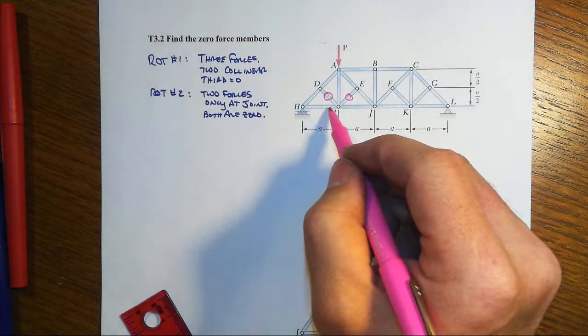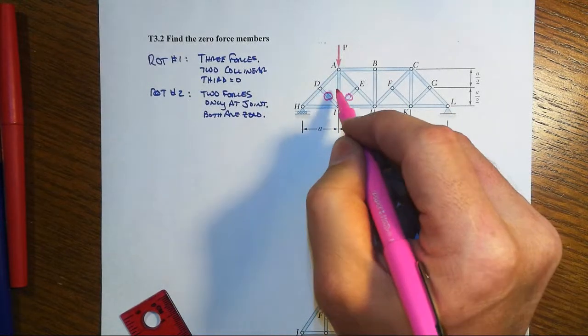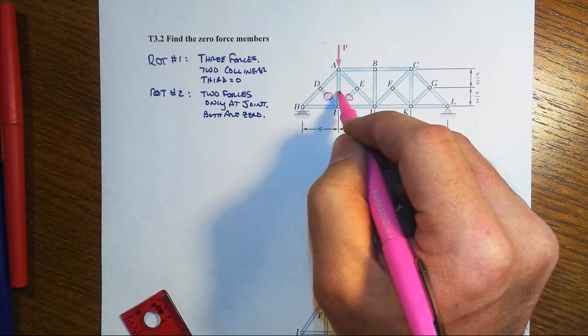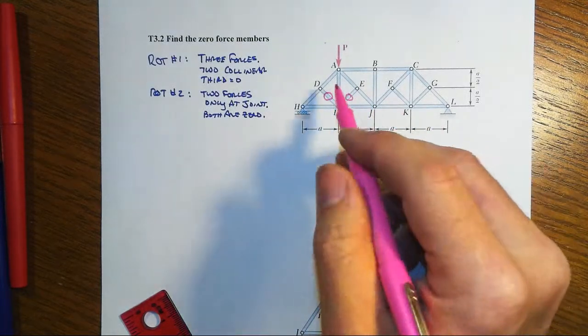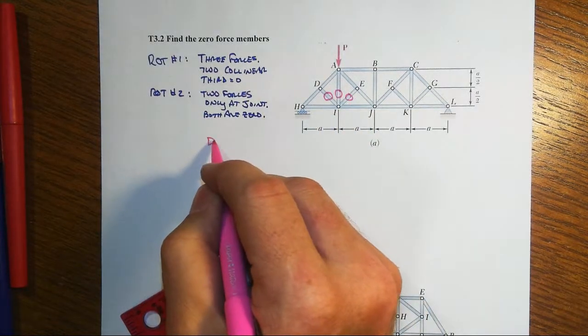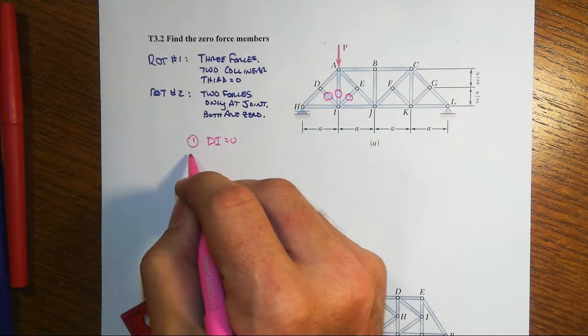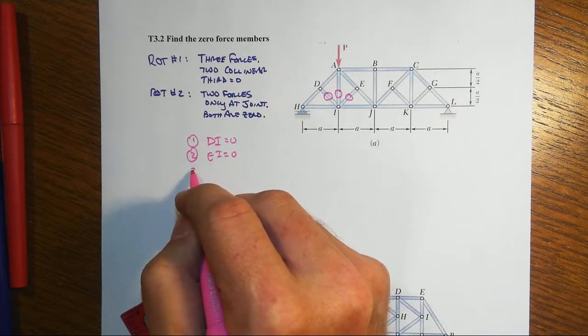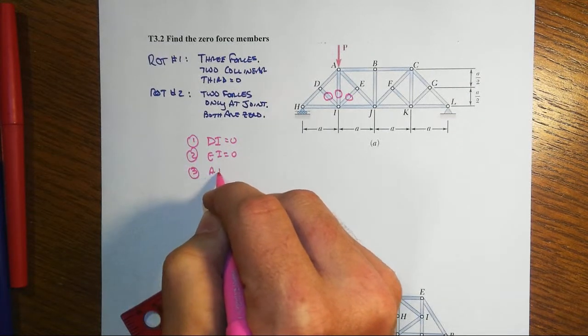And look at this, that leaves us down here at joint I. Ultimately, that AI is the stem of this inverted T. It must now also be zero, but you can only get there by first figuring out DI is zero, then figuring out that EI equals zero, and then you can conclude that AI is zero.